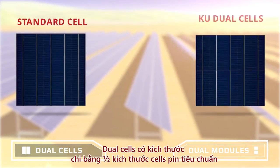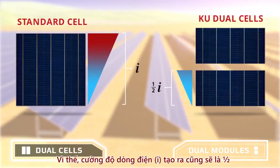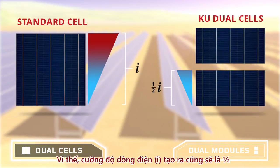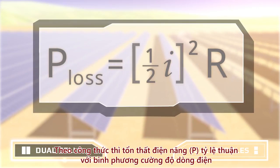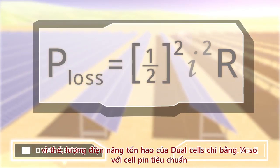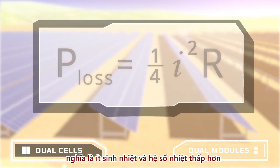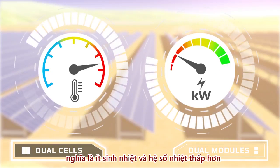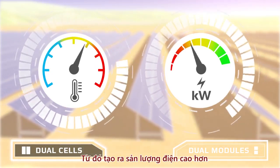Dual cells are half the width of standard cells. Cells with half the width generate half the current. Because the power loss goes as the square of the current, dual cells generate only one quarter of the power loss, which means less heat generated. Because the module operates cooler and has a better temperature coefficient, it can generate a higher power output.